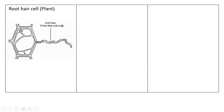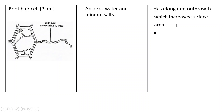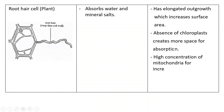The root hair cell, found in plants, has an elongated outgrowth which is a very thin cell with a thin cell wall. Its function is to absorb water and mineral salts. Specialization features: it has an elongated outgrowth which increases surface area, absence of chloroplasts which creates more space for absorption, and a high concentration of mitochondria for increased energy production — energy needed to move mineral salts from the soil into the root.